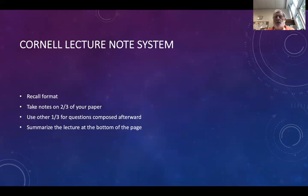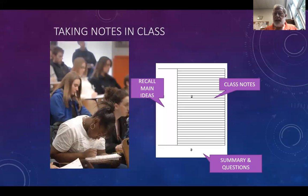There's the Cornell lecture note system, or also called the recall format, where your page looks something like this. Your class notes are in the lined part of the page there, main ideas that are summarized on the left, and summary and questions on the bottom.